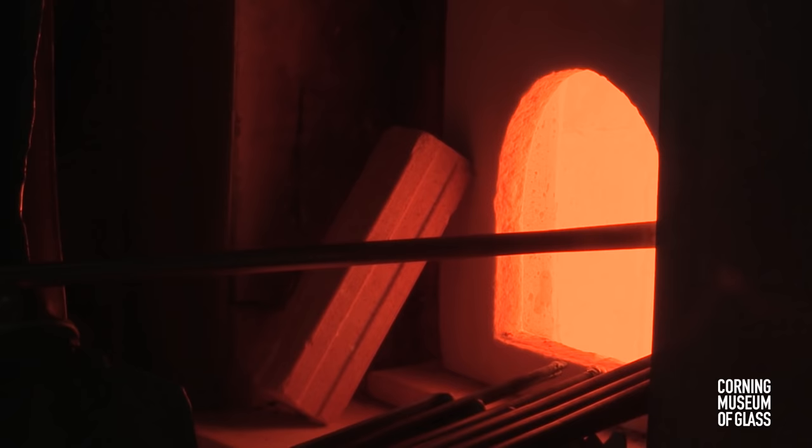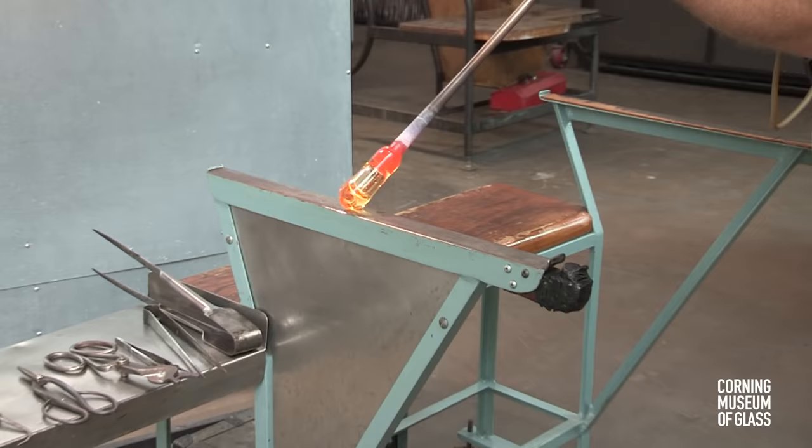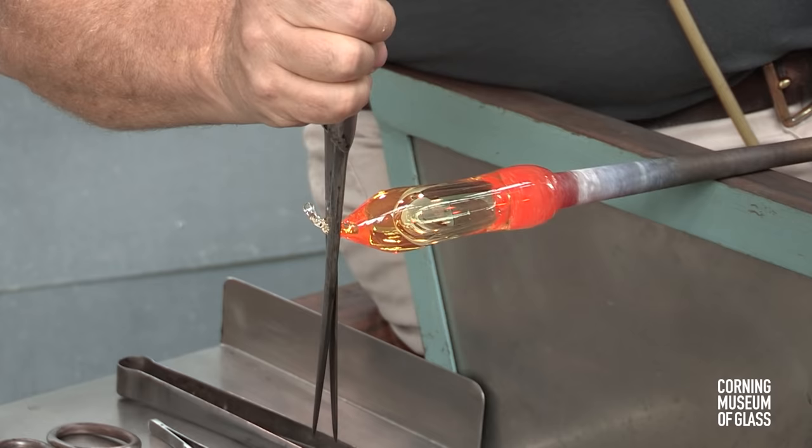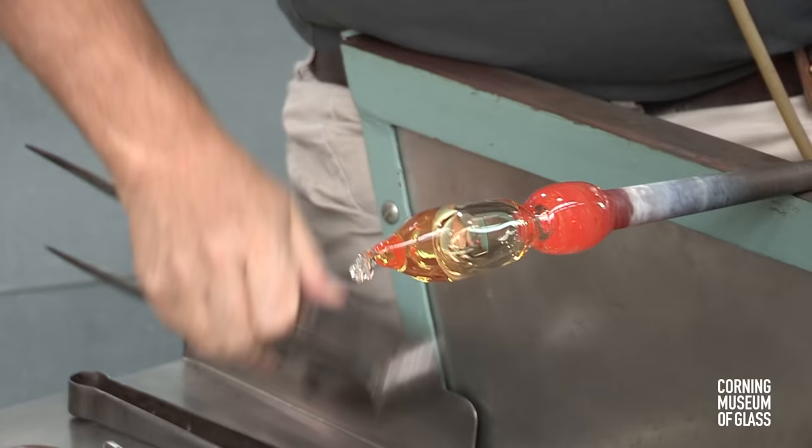The glass is reheated. The tip is marvered again. A center point is pincered on the tip, the glass is elongated, and a neck or constriction is begun near the blowpipe.